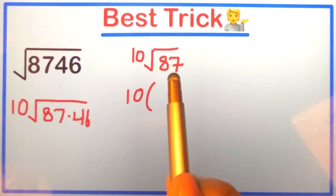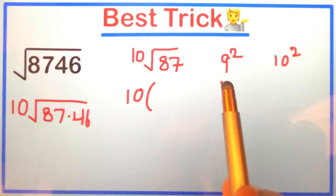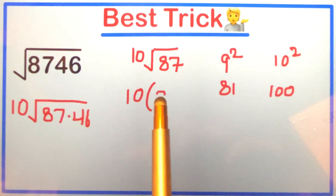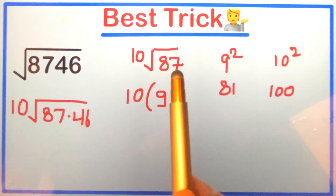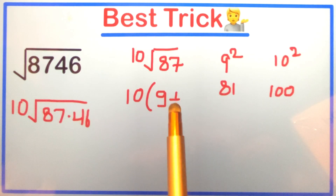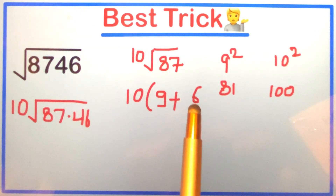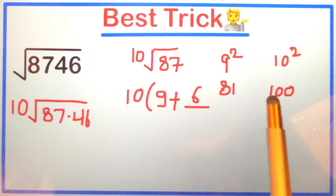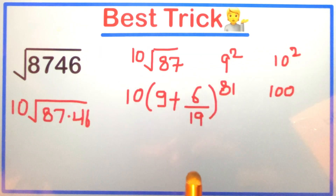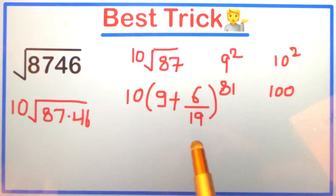We need to see where 87 falls. It comes between 9² and 10², because 9² is 81 and 10² is 100. So we write the smaller number, 9, then plus the difference: 87 minus 81 is 6, divided by the difference between the squares, which is 100 minus 81 equals 19.